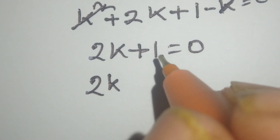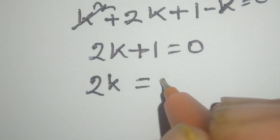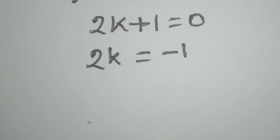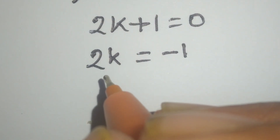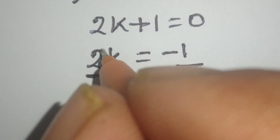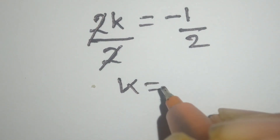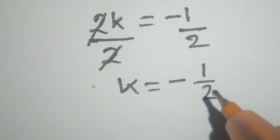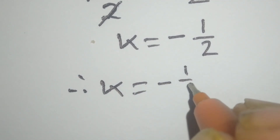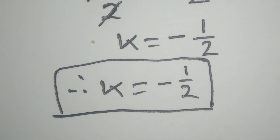Now we will move this plus 1 to the right side, so 2k equals minus 1. Now we will divide both sides by 2. This 2 and this 2 cancel, and here we remain: k is equal to minus 1 over 2. That is the correct answer. Thanks for watching the video. Please like, comment, share, and subscribe.